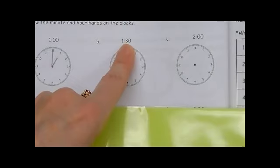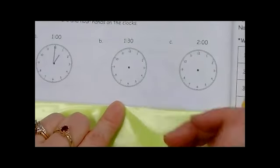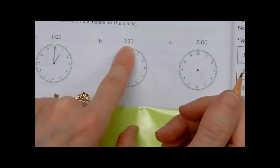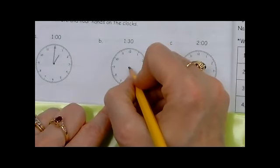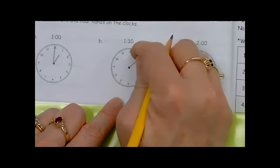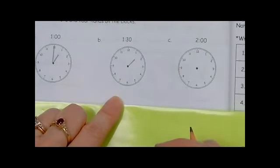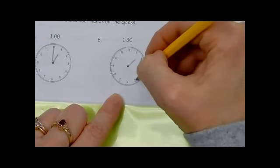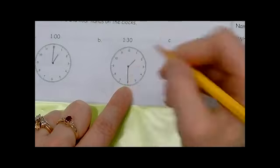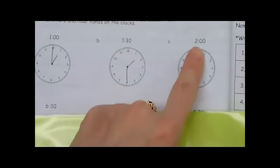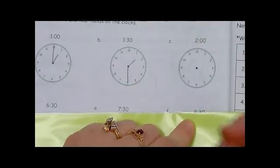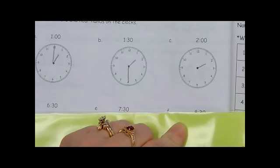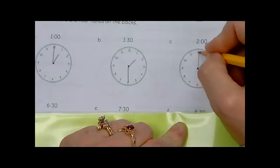B, what does B show? 1:30. So, how would you show that on the clock? What's the hour? Well, 1:30. Another way of saying that is half past one, right? So, the hour hand would be pointing in between the one and two, right? Be half past the one. And where would the minute hand be? 30 minutes around. 5, 10, 15, 20, 25, 30. It'd be on the six. For 1:30. Next, what does this show? Two o'clock. Where would your hour hand be? Pointing to the two. Where would the minute hand be? It's on the hour. So, it's on the 12 for two o'clock.